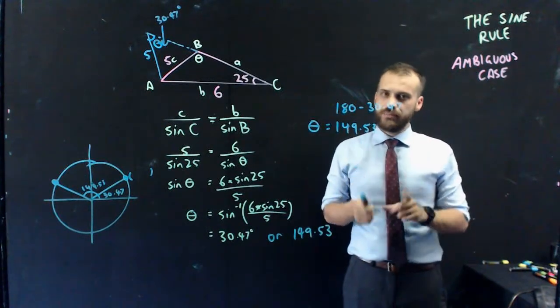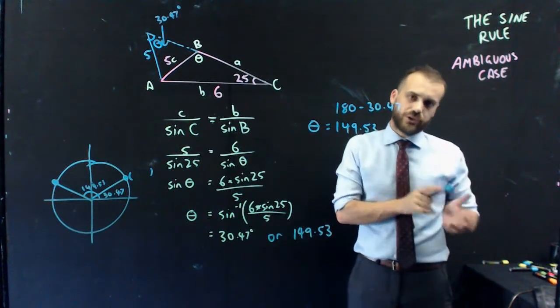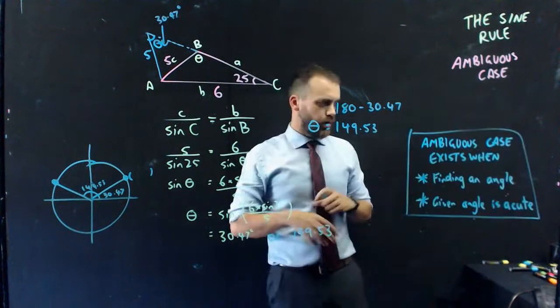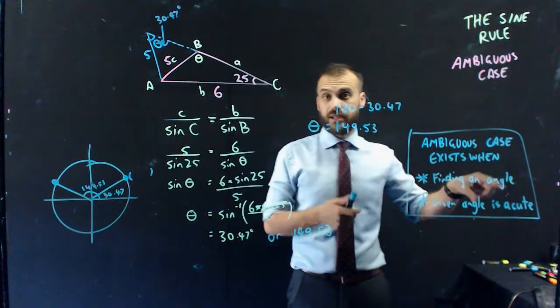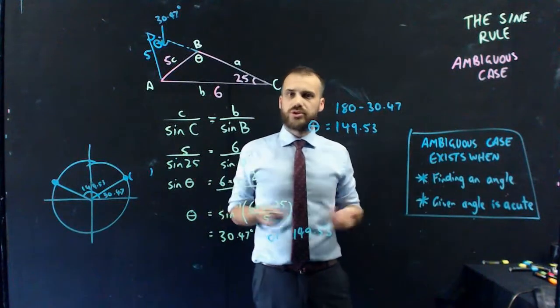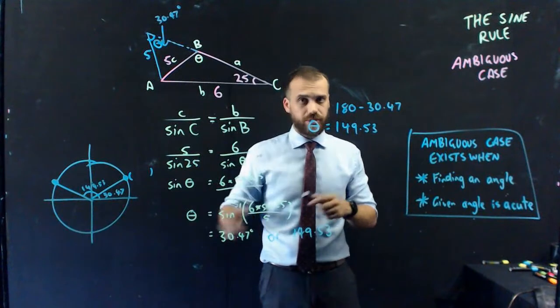Okay, that's the ambiguous case. How do you know if you're looking at a possible ambiguous case? Only really two criteria here. The ambiguous case exists when you're finding an angle. So it doesn't exist when you're doing a sine rule and you're trying to find an unknown side. Only when you're finding an unknown angle like we did here.